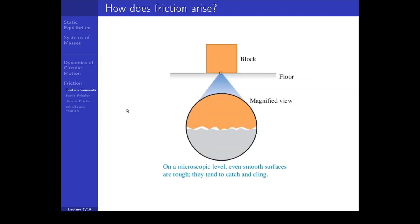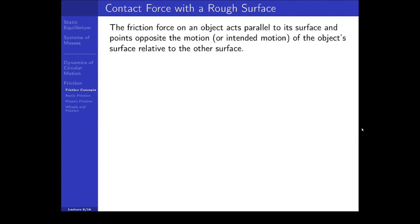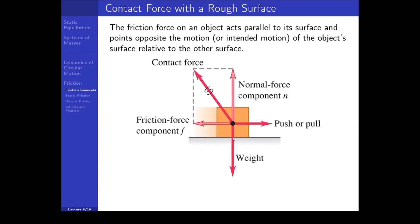How does friction arise? Well, if you have a block on a surface and you look on a microscopic level, you would notice that even smooth surfaces are actually rough, and so they tend to catch and cling. How well two objects cling together depends on the roughness of those surfaces. The friction force will always act opposite the motion or intended motion of the body relative to the other surface.